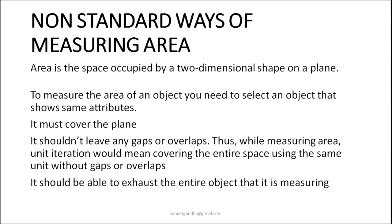Let us now look into non-standard measures of area. Area is a space occupied by a two-dimensional shape on a plane. To measure the area of an object, you need to select an object that shows the same attributes — it must cover the plane. It should not leave any gaps or overlaps. Thus while measuring area, unit iteration would mean covering the entire space using the same unit with no gaps or overlap.